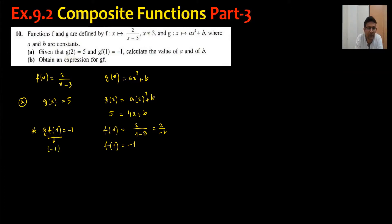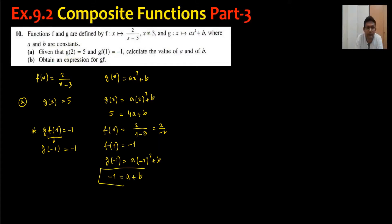Since f(1) equals minus 1, we now need to substitute g of minus 1 equals minus 1. So g of minus 1 equals a times (minus 1) squared plus b, which gives a plus b equals minus 1. This is equation number 2.